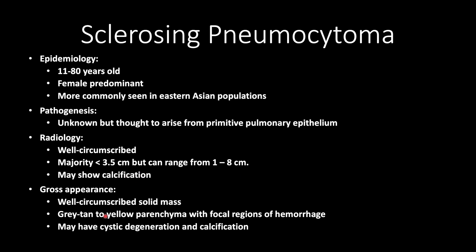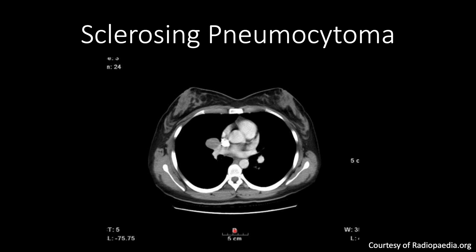Gross appearance, you'll see a well-circumscribed solid mass, and upon serial sectioning, you'll see gray tan to yellow parenchyma with focal regions of hemorrhage. It may have cystic degeneration and calcifications.